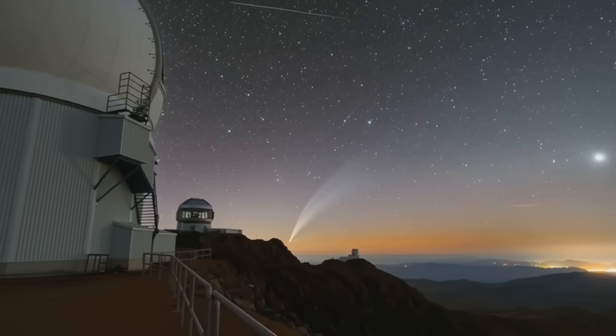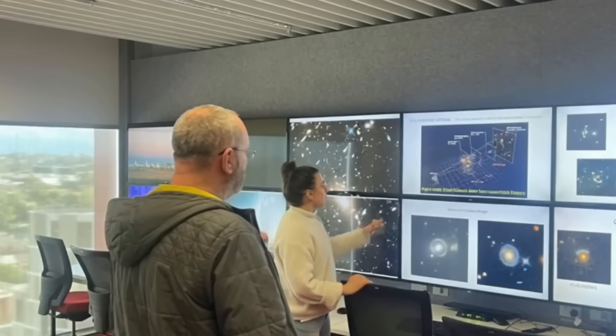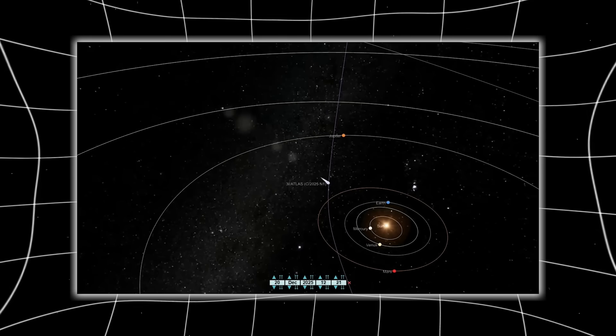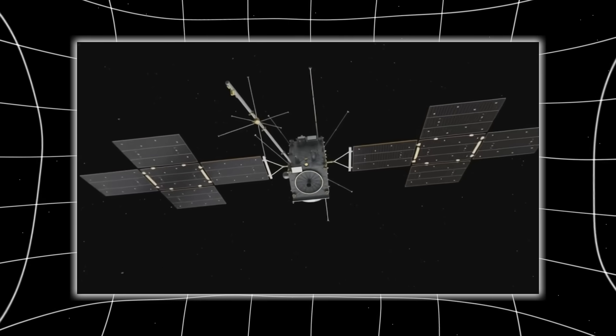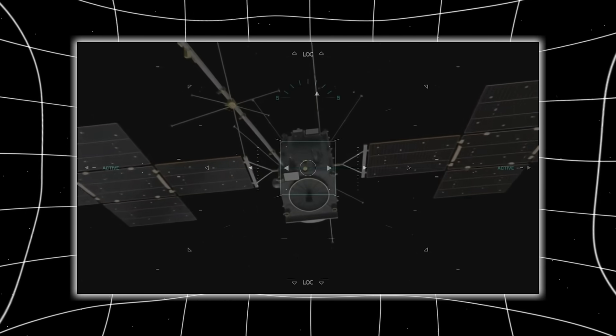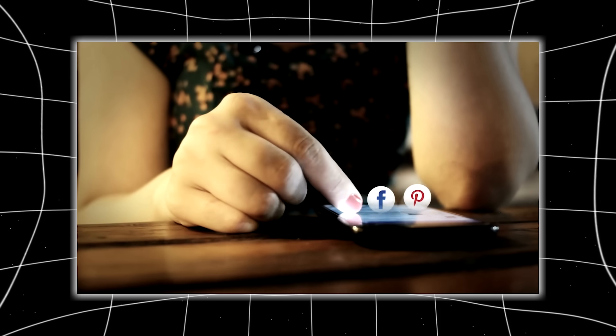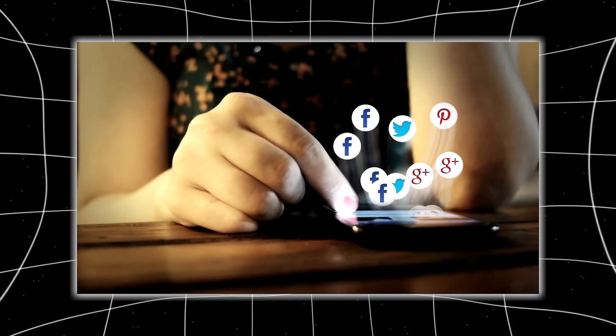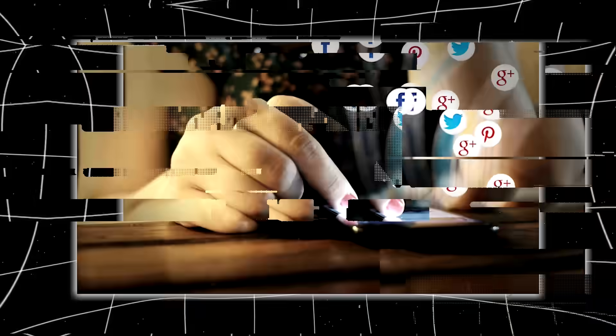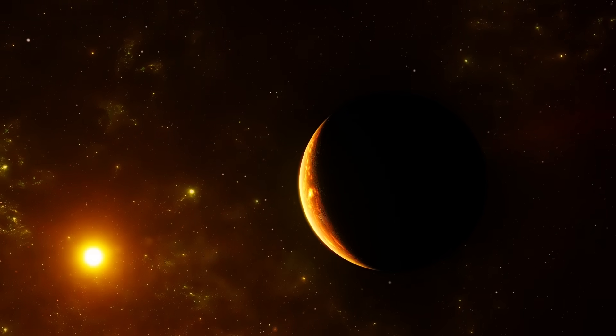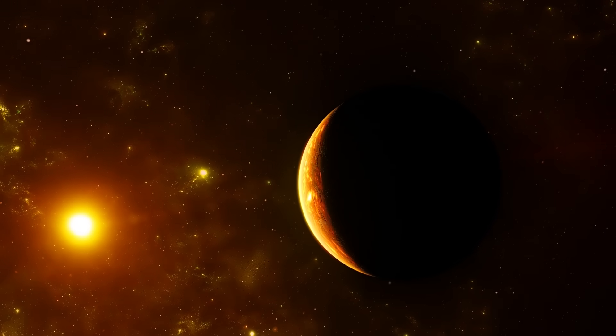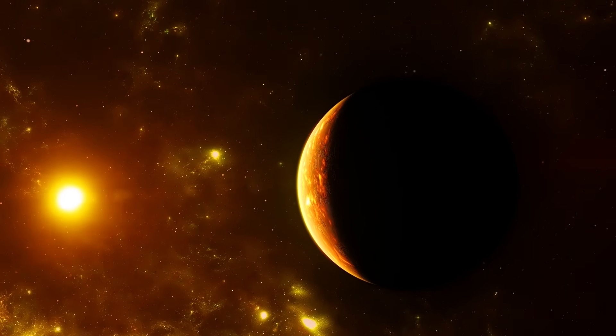After passing its closest approach to the sun, 3i Atlas moved toward Mars, where NASA released a blurry, low-detail image from the Mars Reconnaissance Orbiter. Social media exploded with backlash demanding better photographs, but Ray points out that the real data missing from NASA's presentation wasn't from Mars at all, it was from something far closer and far more revealing.